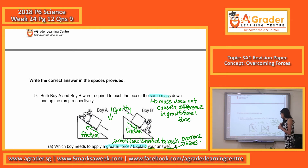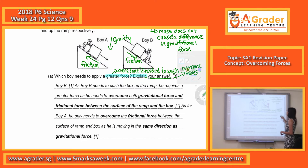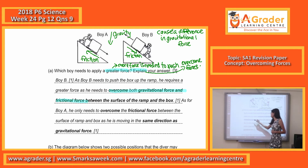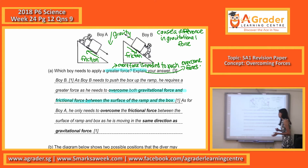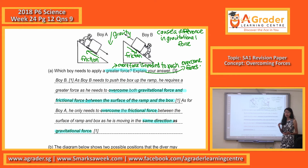So the answer is boy B requires greater force. Why? Because boy B needs to overcome both gravitational force and frictional force — the friction between the surface and the box. Whereas boy A only needs to overcome frictional force, because boy A is moving in the same direction as gravitational force, so it does not need to overcome gravitational force at all.